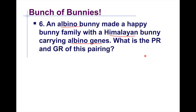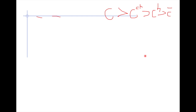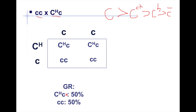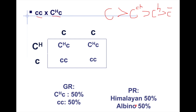Next: an albino bunny mates with a Himalayan bunny that carries albino genes. The albino genotype is two small c's (cc), and the Himalayan carrying albino genes has genotype CH c (Himalayan-albino). Crossing them gives: CH c (Himalayan) and cc (albino). Since Himalayan overpowers albino, the CH c offspring will be Himalayan, and cc offspring will be albino. The phenotypic ratio is 50% Himalayan and 50% albino.